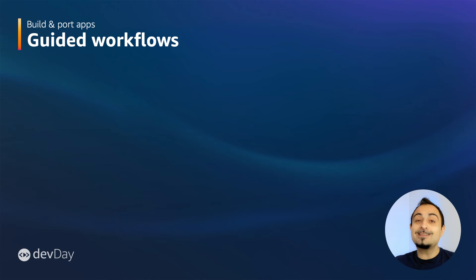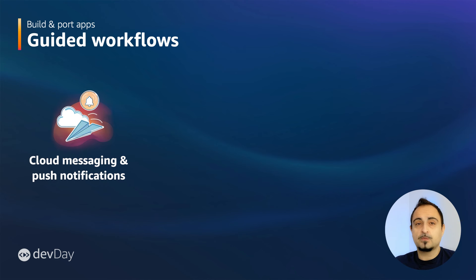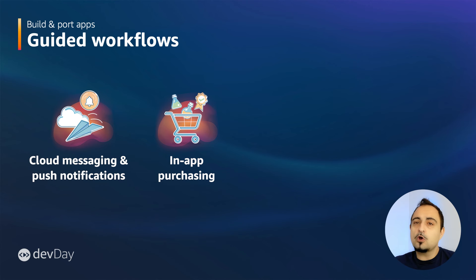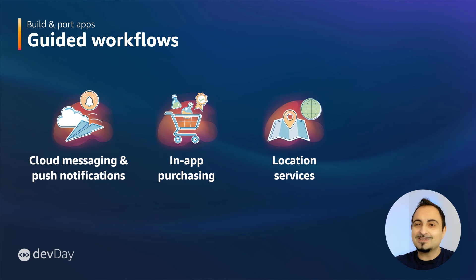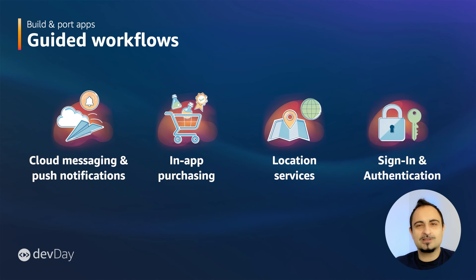Our Guided Workflows help you quickly determine app compatibility with the Amazon App Store for common requirements. Cloud messaging and push notifications are covered, with several paths available through Amazon Device Messaging, Amazon SNS, Amazon Pinpoint, and abstraction layers for topic and group-based messaging. In-app purchasing workflows cover how to migrate from Google Play Billing Library to Amazon App Store SDK. Location services workflows incorporate geo-location with tools such as Amazon Amplify Geo and Amazon Maps. Authentication is the latest workflow, making it easier to provide Login with Amazon for developers that have previously implemented Google Play authentication.